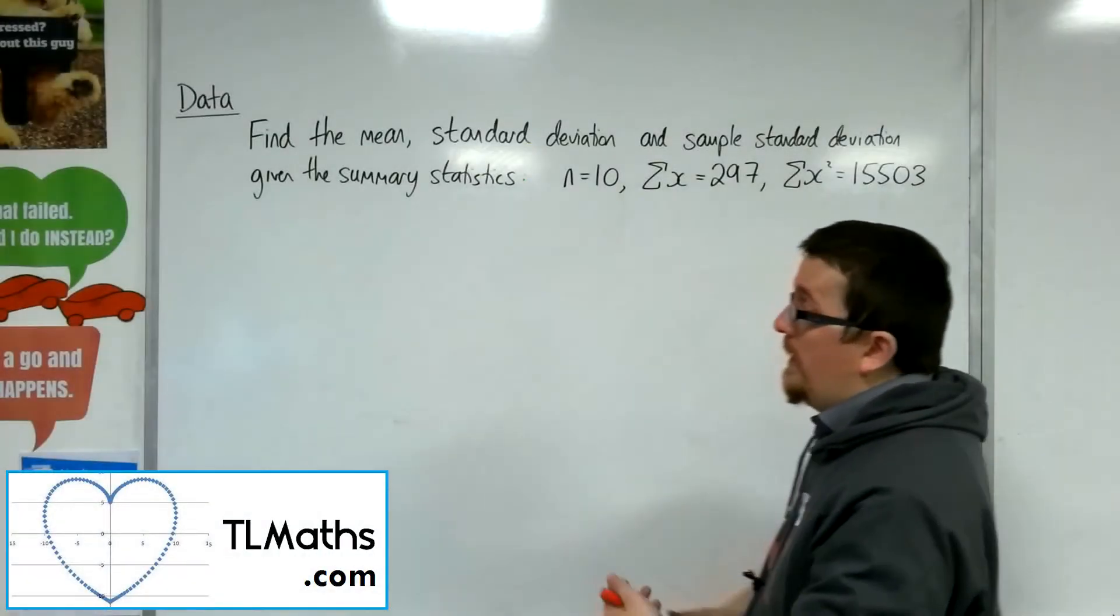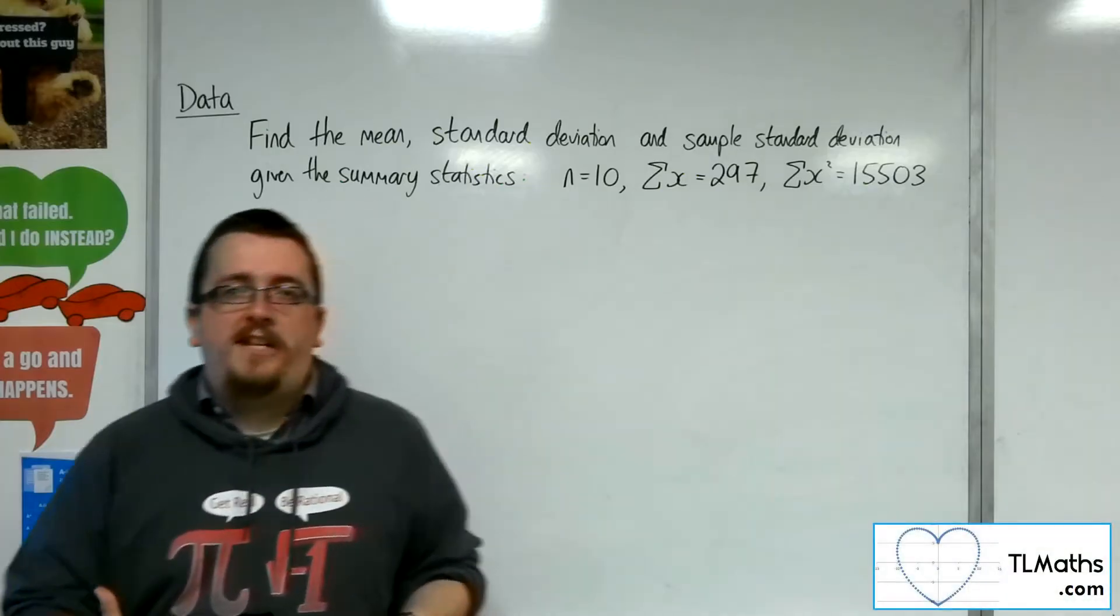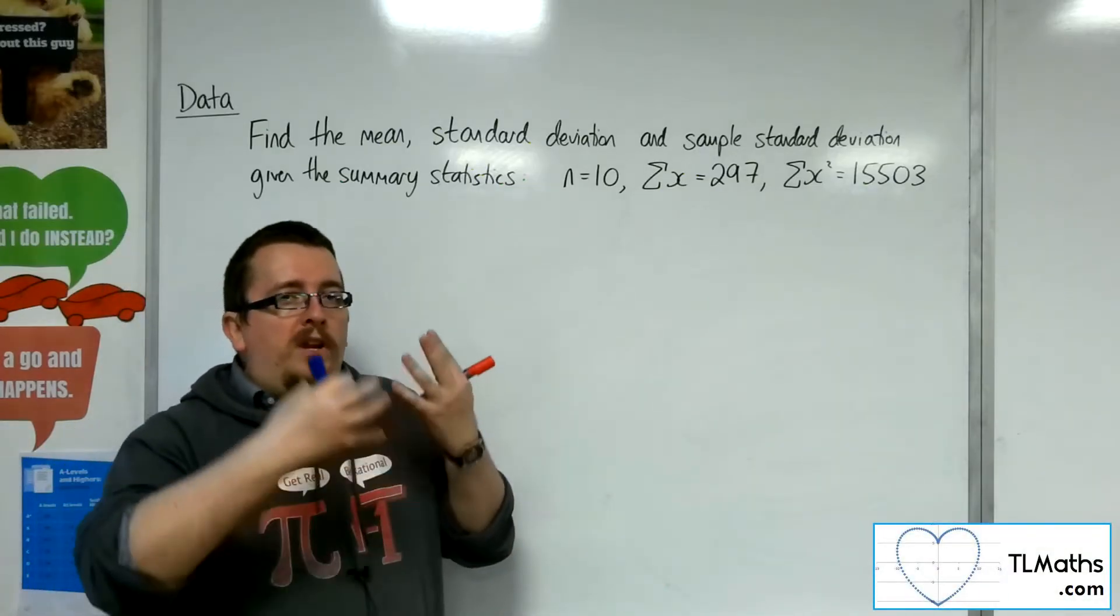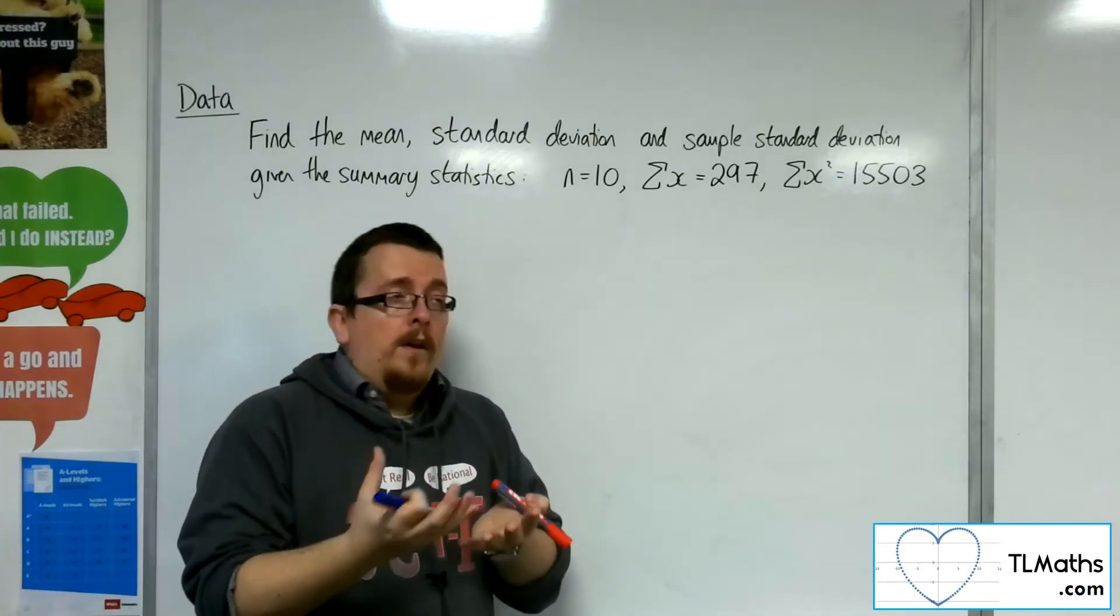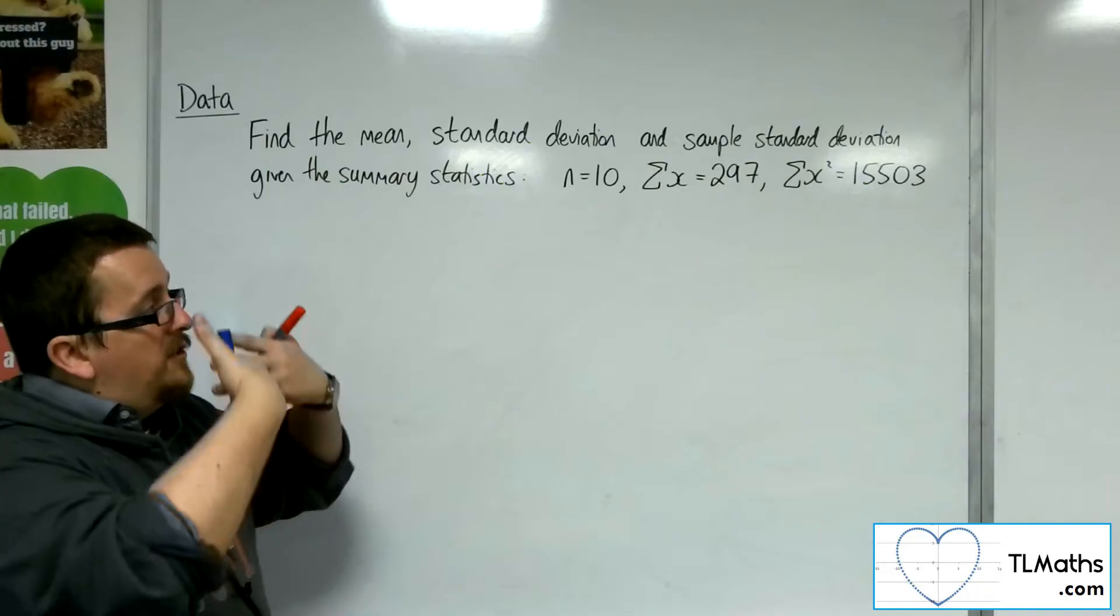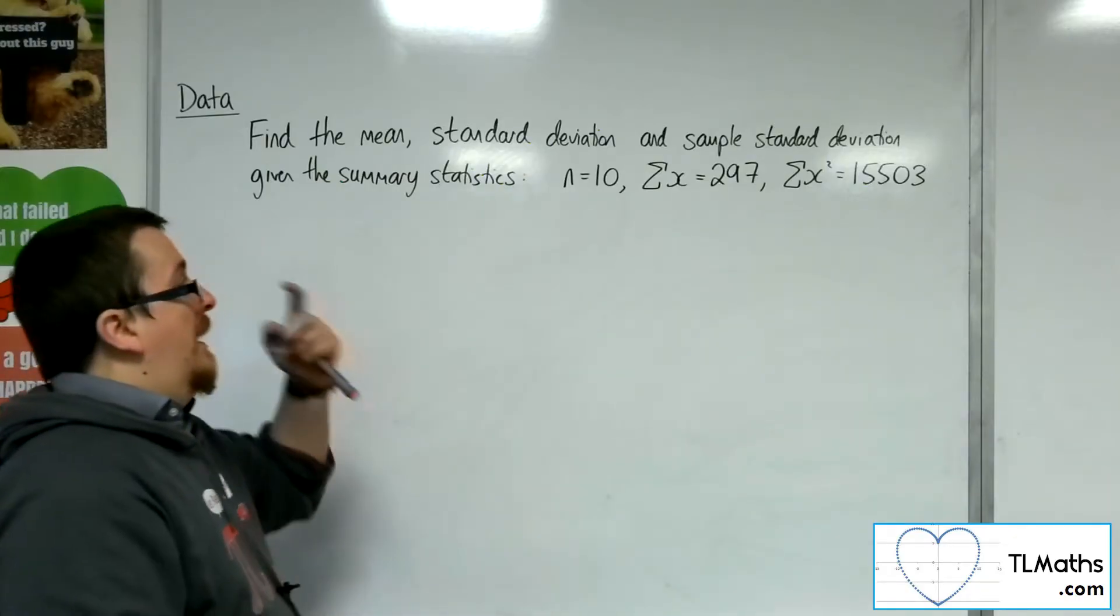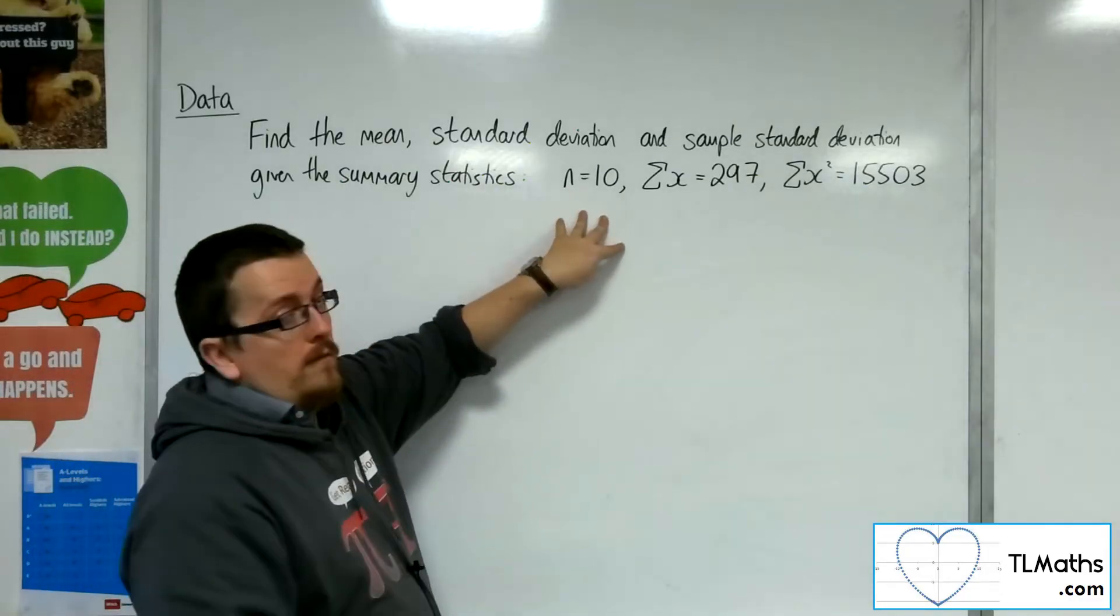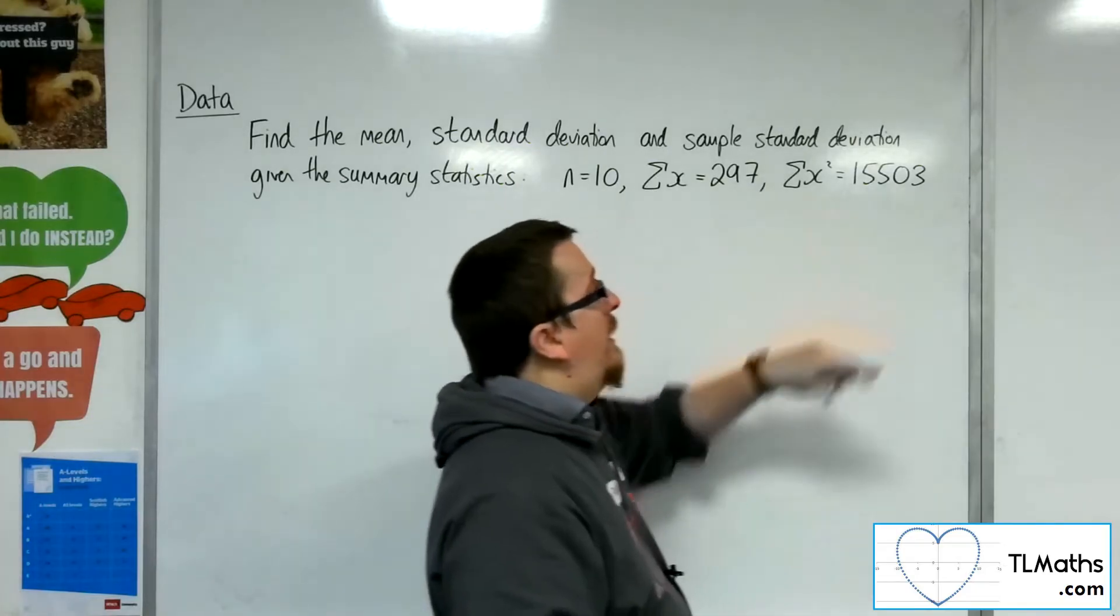So let's say I've been given some summary statistics. When we talk about summary statistics, what we mean is that you've been given the component parts of the statistics to then be substituting them into the formula for standard deviation and the mean. So you'd be given n is 10, for example, sum of x, and sum of x squared.